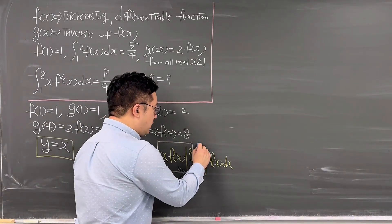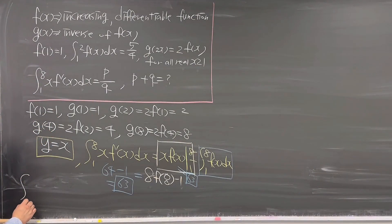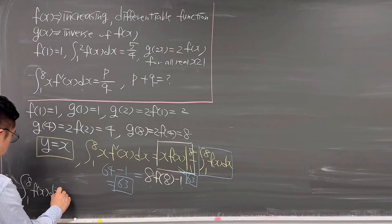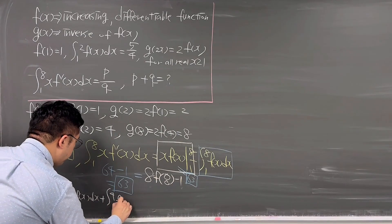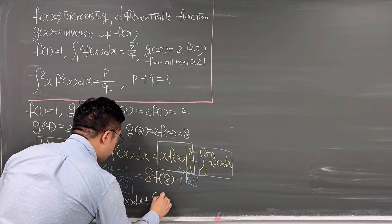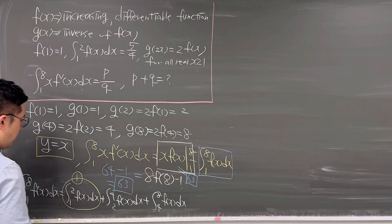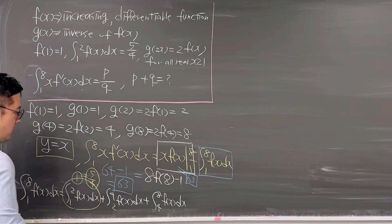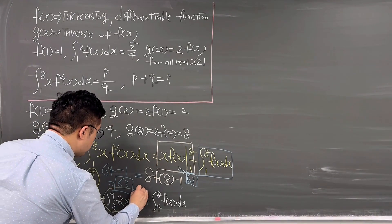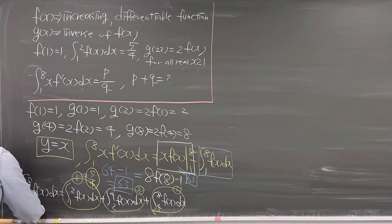All we need to do is analyze the integral from 1 to 8 of f(x)dx. Using the key values 1, 2, 4, 8, we split it into: integral from 1 to 2 of f(x)dx (integral #1), plus integral from 2 to 4 of f(x)dx (integral #2), plus integral from 4 to 8 of f(x)dx (integral #3). Let me make a graph to visualize this.